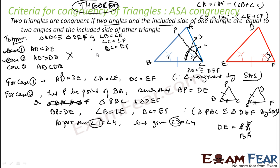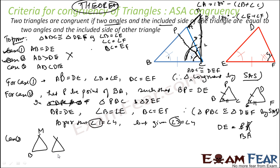Same thing for case 3 as well. In case 3, you take a point M on the extension such that BM equals DE, assuming AB is less than DE. This is by construction, and the given angle is also equal. So these two triangles have to be congruent by SAS.